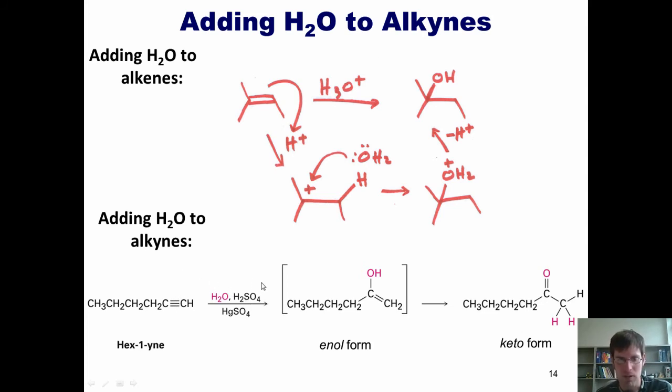Electrons come out and grab a proton from sulfuric acid, and where does that proton go? It goes to the external carbon because that would generate the more stable carbocation intermediate, the internal one. Water then comes in and gets deprotonated to give this. You should remember that this intermediate is called an enol because it has an alkene and an alcohol on the same carbon, an enol. Enols instantly rearrange to form this, which is a ketone. This process, interconversion, is called tautomerism.